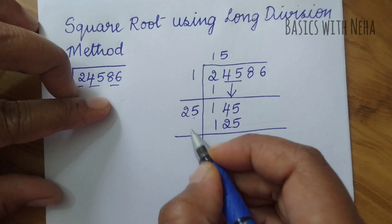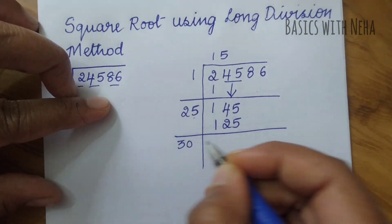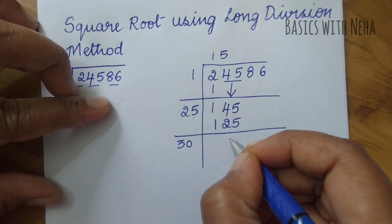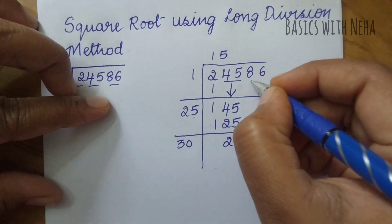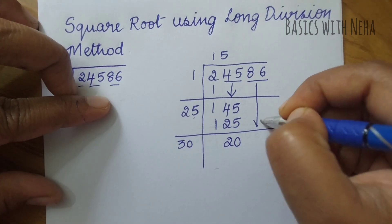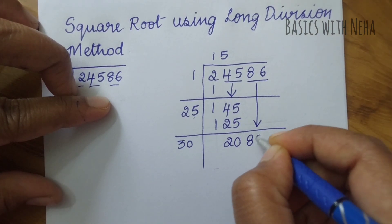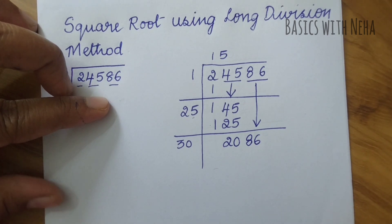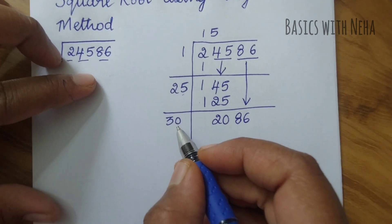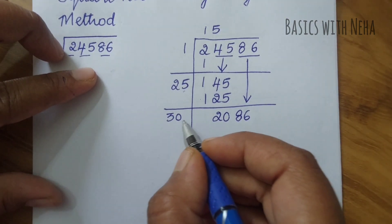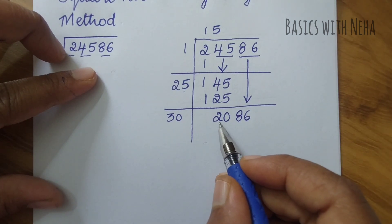25 times 5 is 125. Since I've taken 5 as the number, I'm going to add 5 to this, so 25 plus 5 is 30. 145 minus 125 is 20. Since these two are in one group, I'm going to take that number down, which will be 2086.